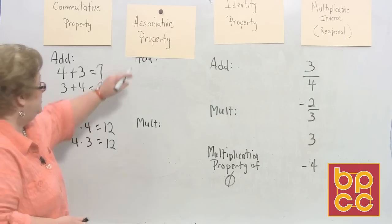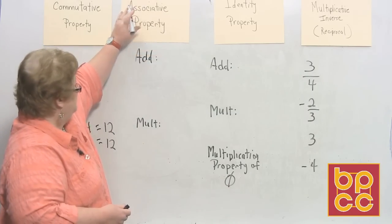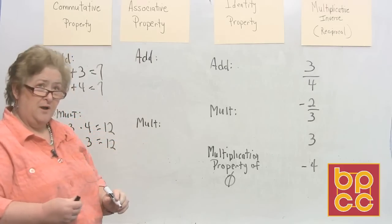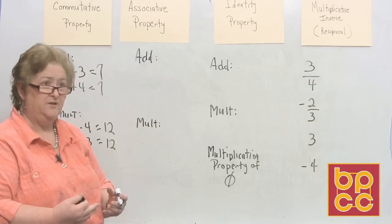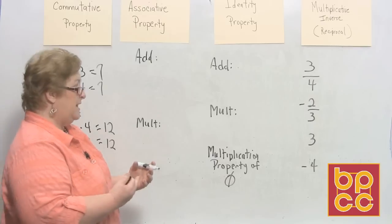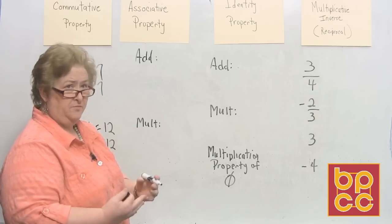Okay, now let's go for the associative property. The associative property - associate means to group. So I'm going to show you how to group numbers.